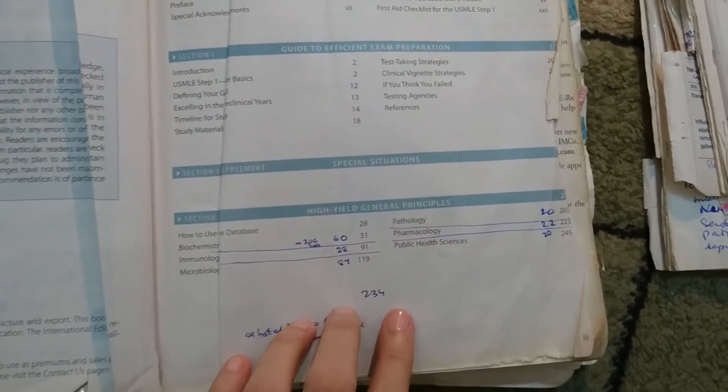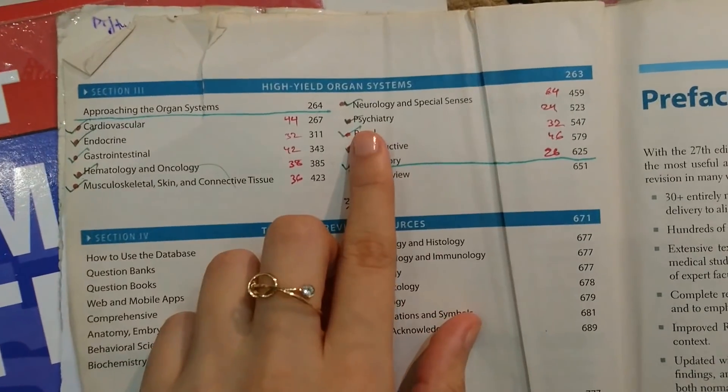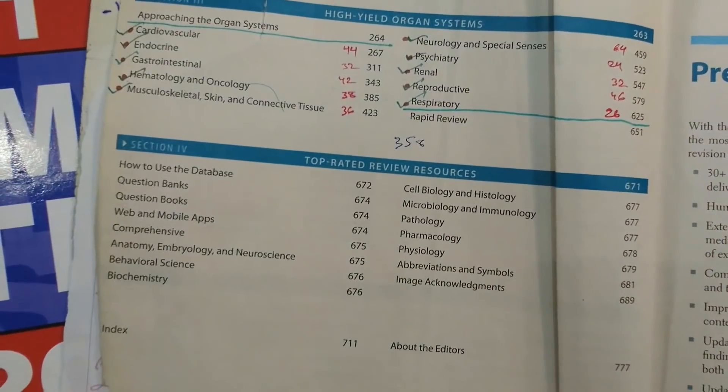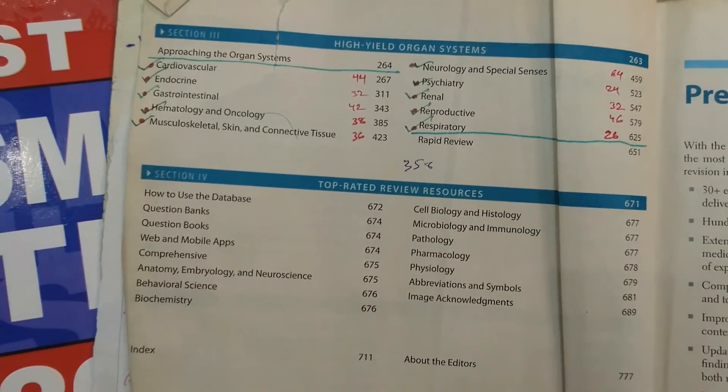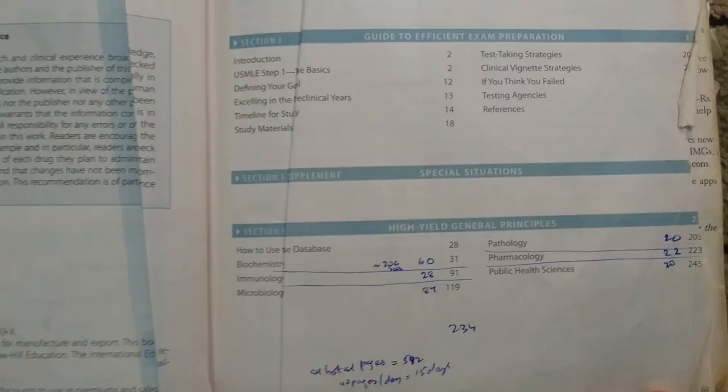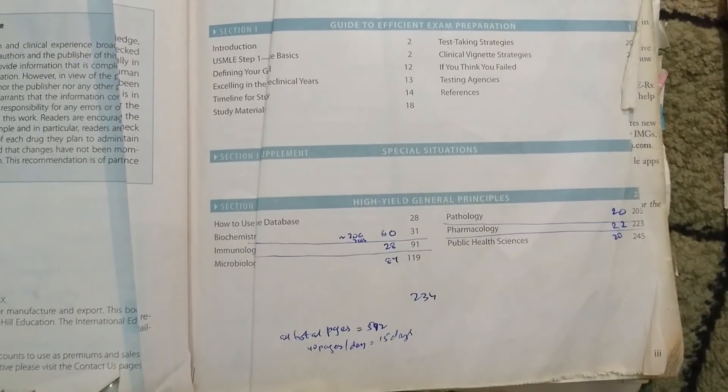This way you know which of the chapters are bigger and which are smaller, and then you do the same thing over here at the high yield organ system. This way I have a clear idea that for example psychiatry is a shorter topic than let's suppose cardiology. One more thing that will happen by doing this is that you'll be able to plan out the number of days that you'll need to finish these topics.